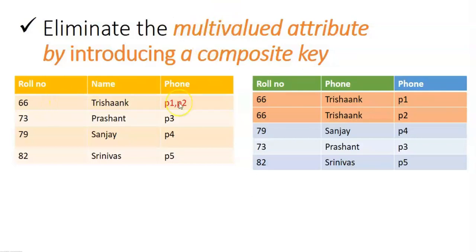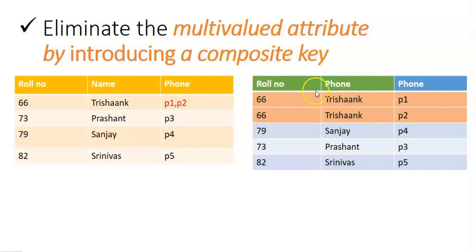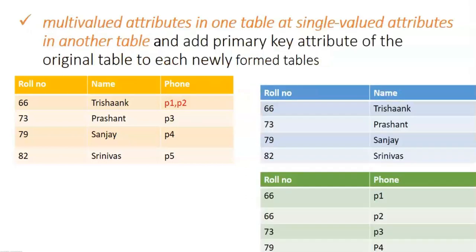In the first approach, we eliminate multi-valued attributes by introducing a composite key — that means introducing a new row for each repeated value. For example, student Trishank with roll number 66 has phone 1 and phone 2. In the new table, introduce roll number 66 with phone number 1, and again 66 with phone number 2. The combination of roll number and phone number acts as a composite key to distinguish each record uniquely — breaking multi-valued records into single-valued records.